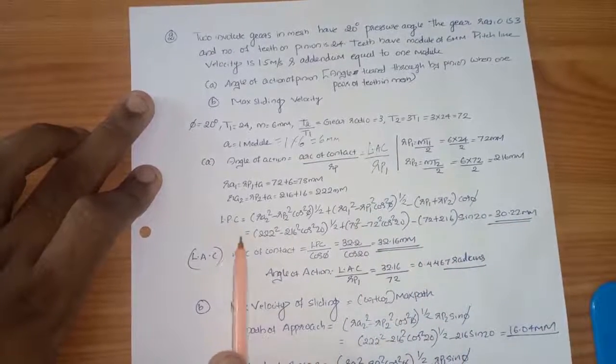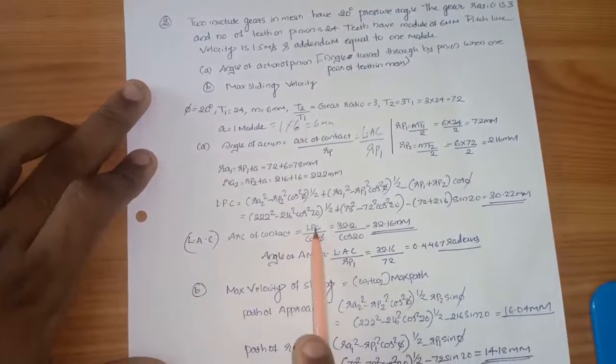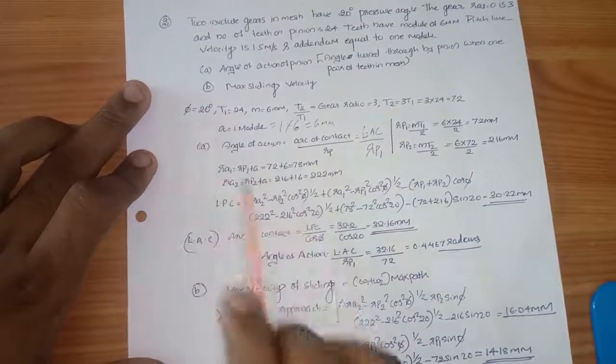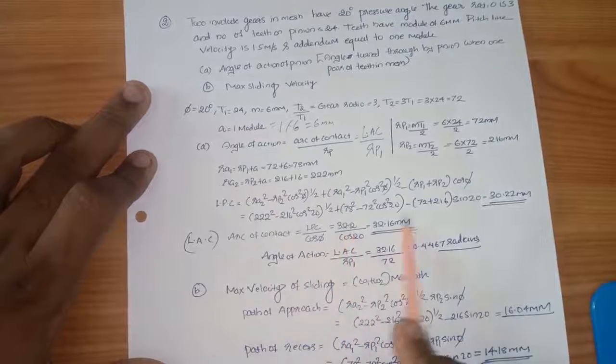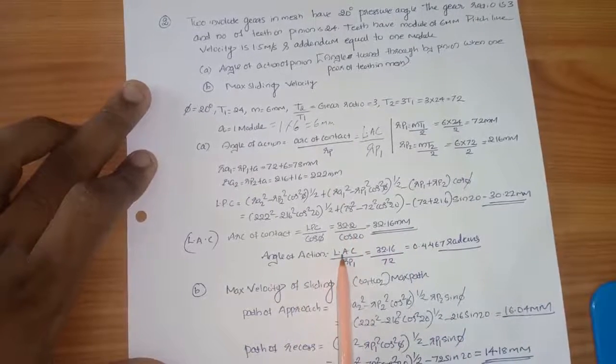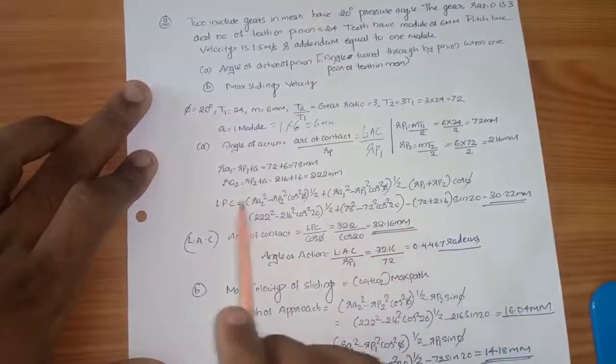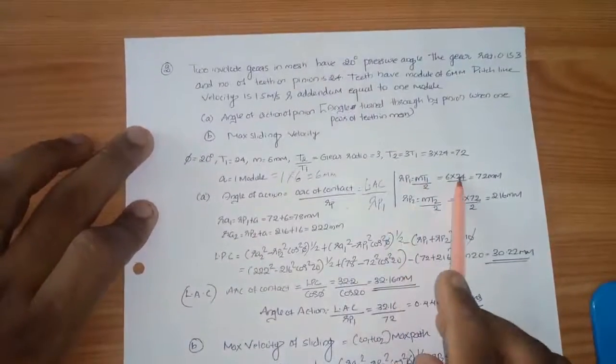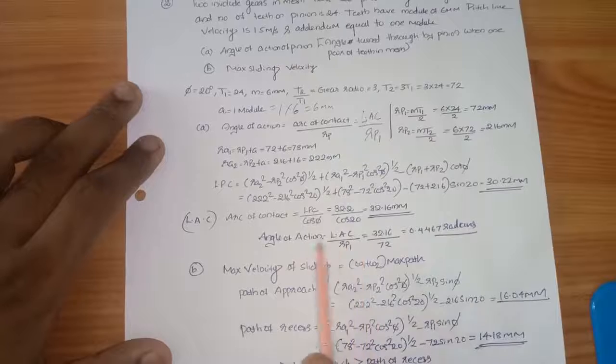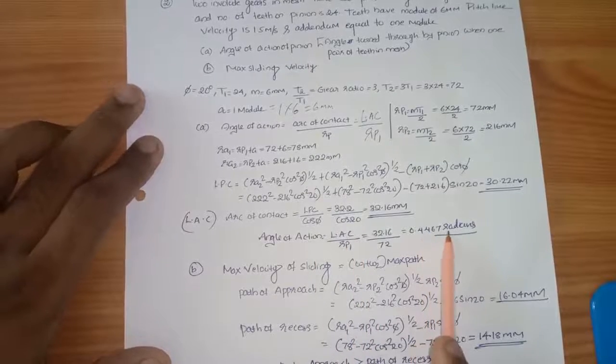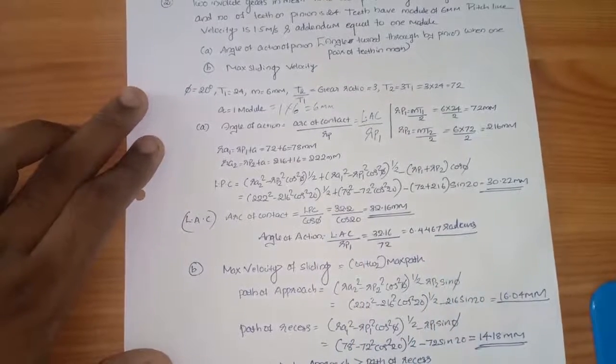LAC by cos phi raised to 20 degree, then we substitute LAC. This is the angle of action, LAC by rp1. LAC 32.16, rp1 we already have M T1 by 2. Then we substitute LAC, this is the angle of action.